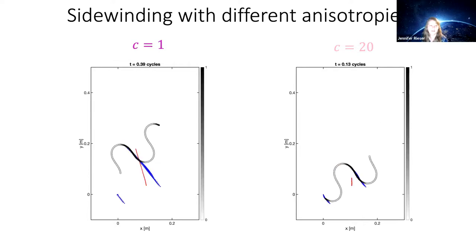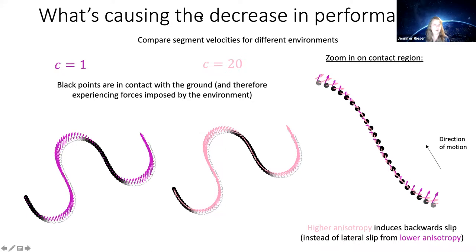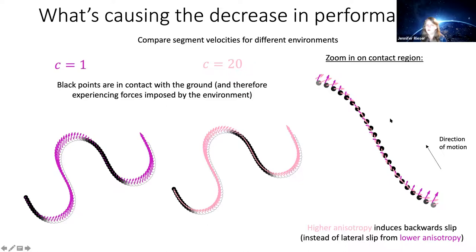Looking at velocity vectors at a particular snapshot: for anisotropy equals one, the instantaneous velocity looks clean along the body. For higher anisotropy, zooming in on the contact region, higher anisotropy essentially causes the force balance to find a solution where there's a component of velocity pointed against the direction of motion — essentially the animal is fighting itself to move forward, hindering its progress.